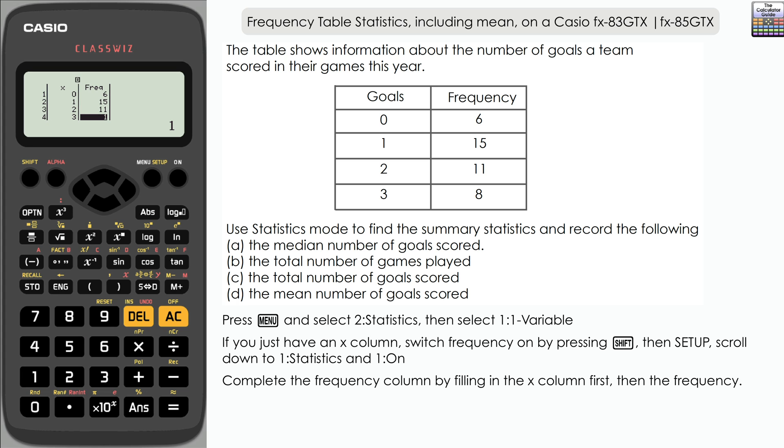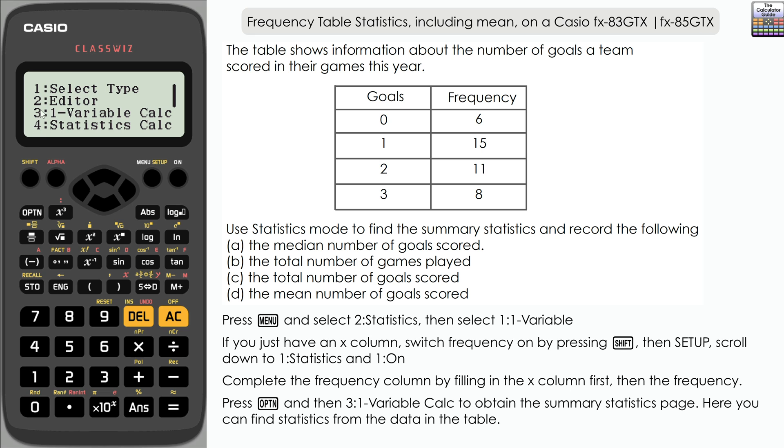Once we've inputted that, press option and then option 3 is one variable calc. Then we should have a summary statistics page here that we can find the information that we need to answer the question.